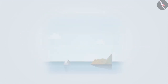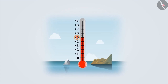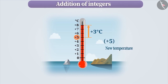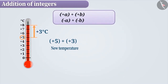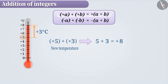Let us suppose the temperature of a certain place is plus 5 degrees centigrade. If it increases by plus 3 degrees, then the new temperature can be found by finding the value of plus 5 plus plus 3. If the signs of the integers are the same, then they are added without sign. After that, the sign is included with the result. While adding two positive integers, we add them without sign and later the plus sign is included in the result 8.